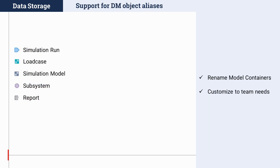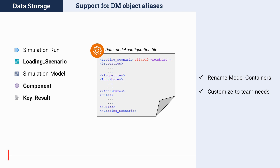With regards to the data model itself, ANSA now supports the use of aliases for the definition of alternative names for any of the model containers. With the aid of aliases, labels like subsystem, simulation model, or others widely used in the model browser and DM browser can be renamed into something closer to the terminology used in engineering teams. For example, subsystem could be aliased to component, load case could be aliased to load case scenario, or report could be aliased to key result. The definition of these aliases takes place directly in the DM structure XML, the data model configuration file.